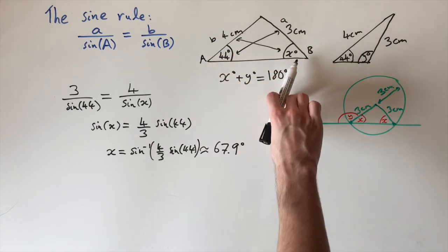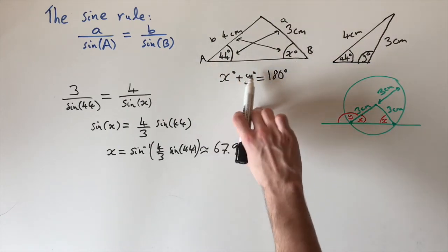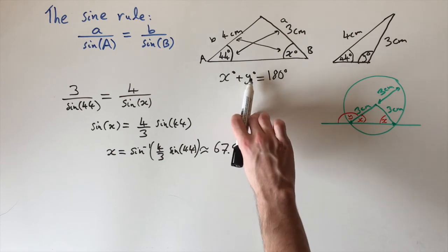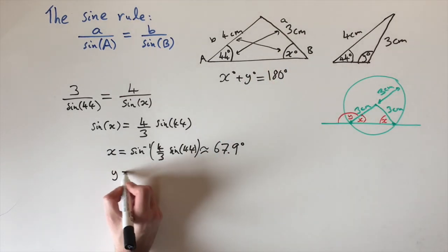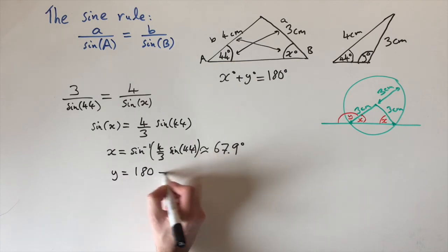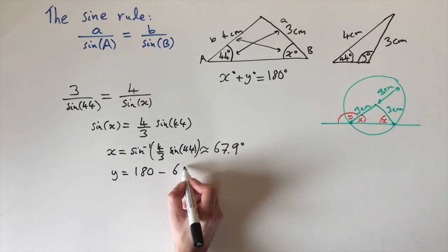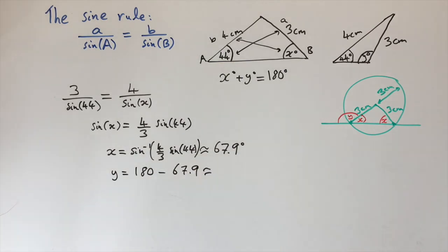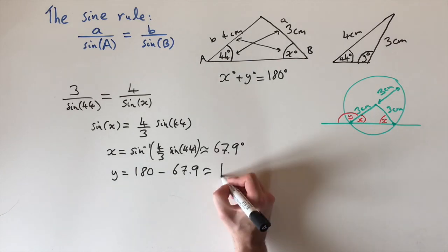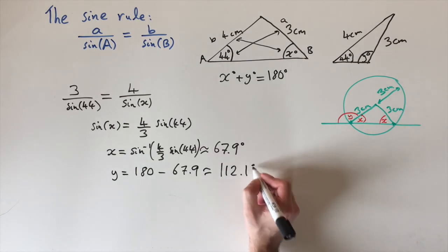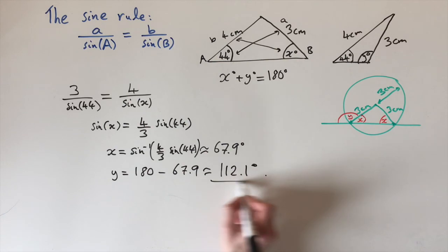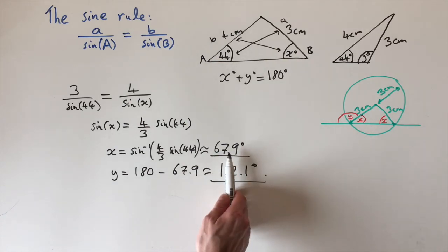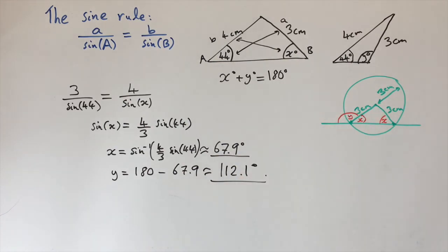And then, to find the second solution, to find the angle y, we just need to use this relationship. So y equals 180 minus 67.9, approximately. So y is roughly 112.1 degrees. These are our two solutions. You can double check that if you add these two up together, you get 180 degrees.